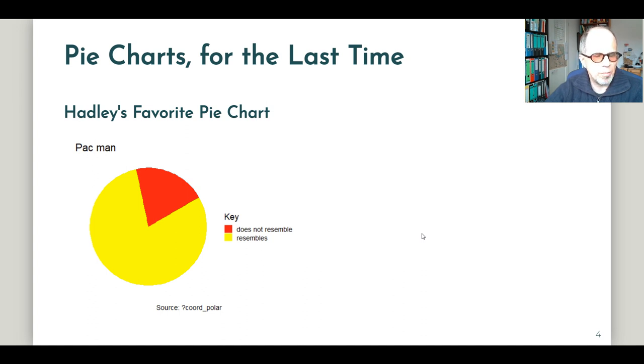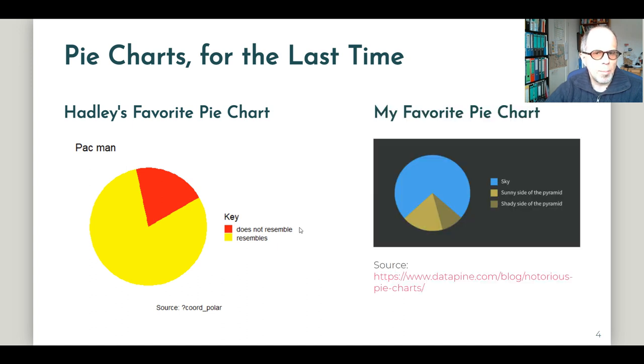Hadley's favorite pie chart is here a pacman display. Most of the chart resembles pacman and part of it does not resemble pacman. If you want the code for this it's even included in the ggplot2 package in the help page for the coord_polar function. By the way the code for the whole presentation and also the data is on my github profile. The data is created in line in the markdown document. The link is in the description. My favorite pie chart is one that I found on the Data Fine blog that I can recommend. So it shows a pyramid in the blue sky and you see we can distinguish the sunny side and the shady side of the pyramid. But that's enough on pie charts for now. Let's move on to bar charts.